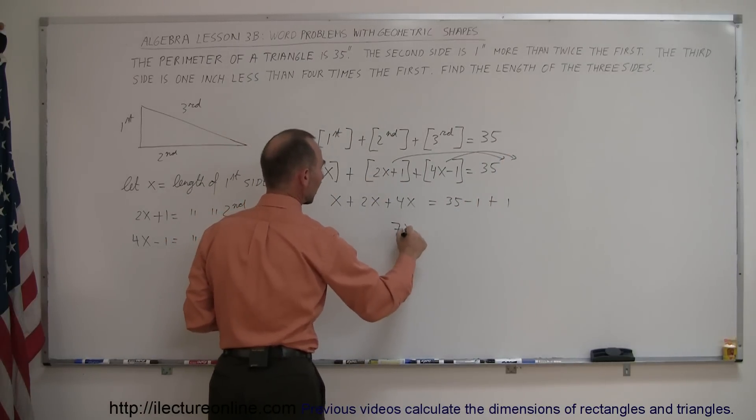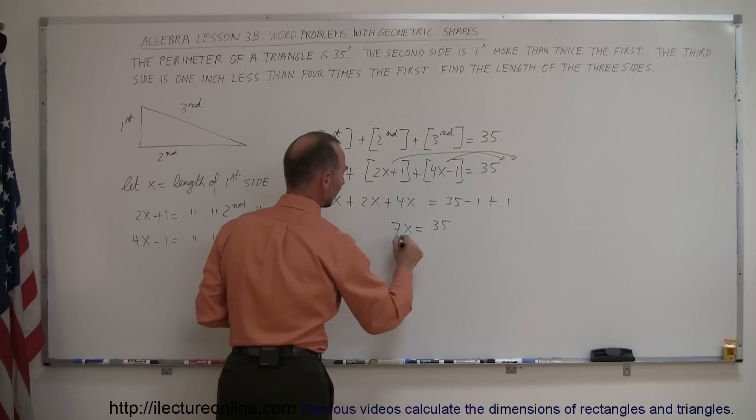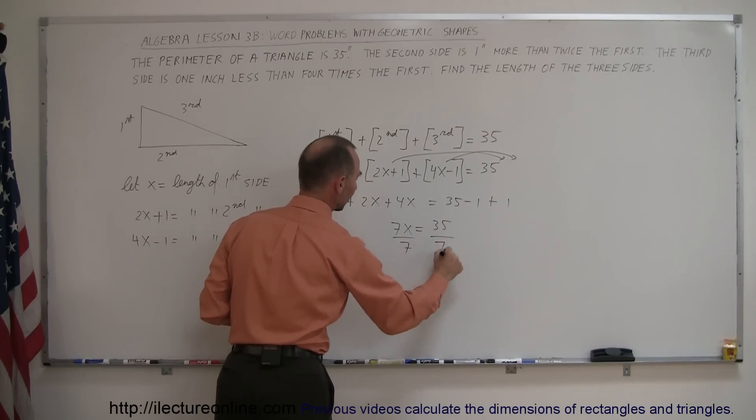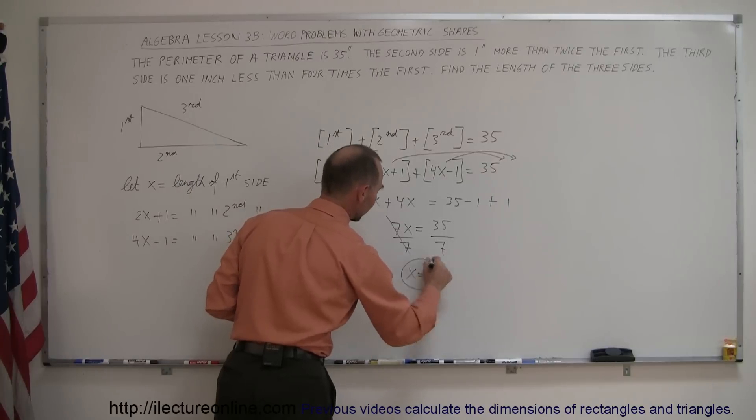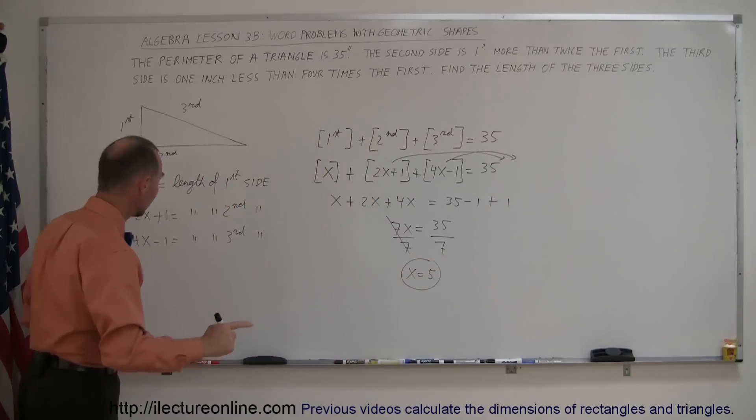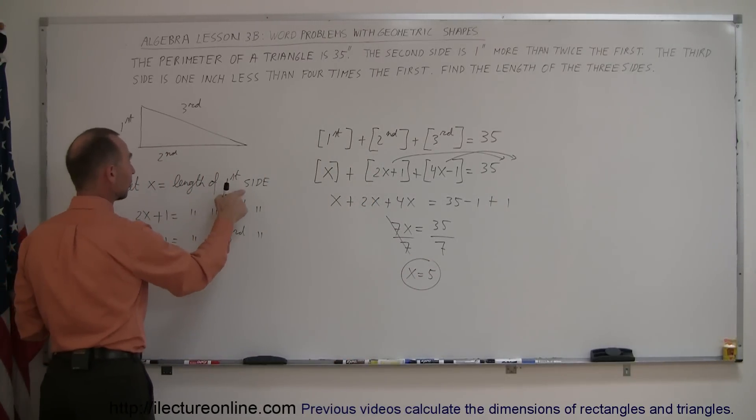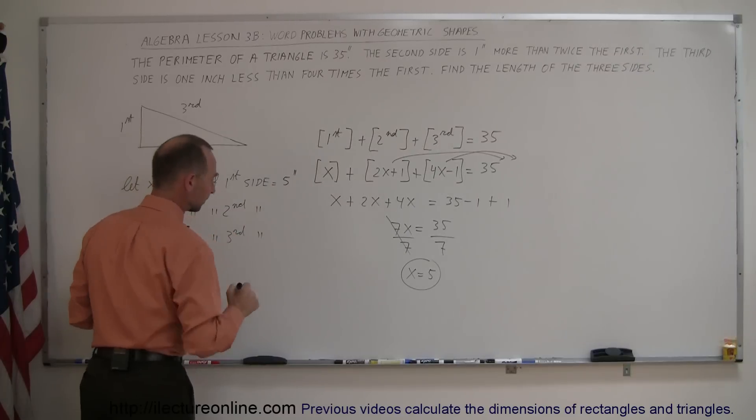And then dividing both sides by the coefficient in front of the x, x equals 5. So going back to our definitions, we said that x equals the length of the first side, so the first side was 5 inches long.